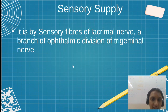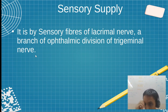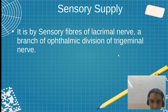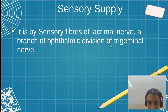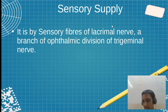For sensory supply, it is directly the lacrimal nerve — very simple. It is the ophthalmic division of the trigeminal nerve. From that, the lacrimal nerve gives the sensory supply.